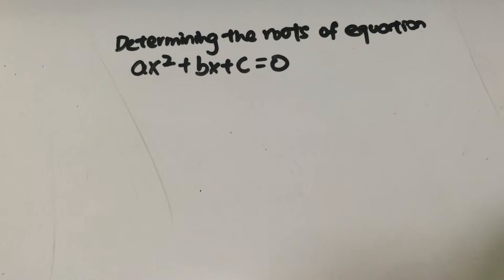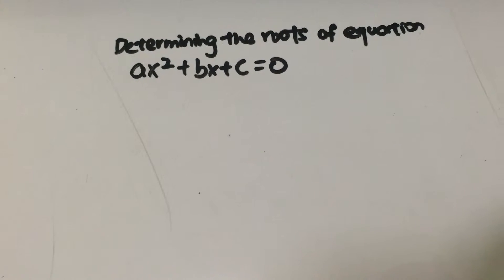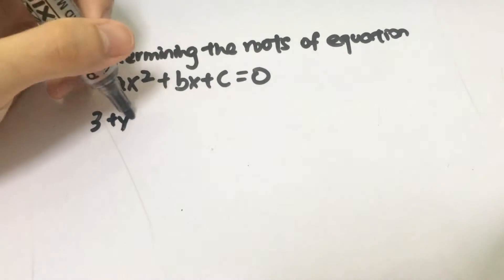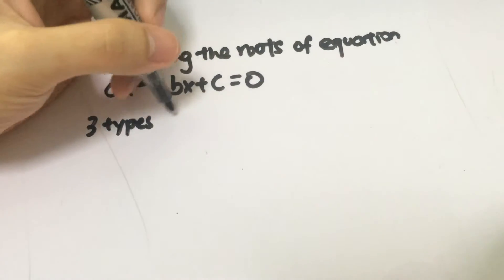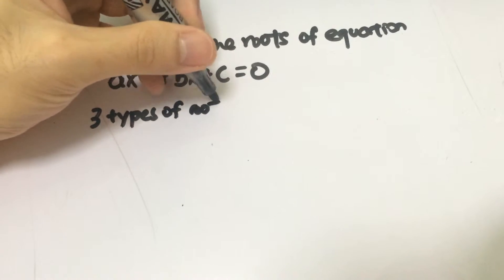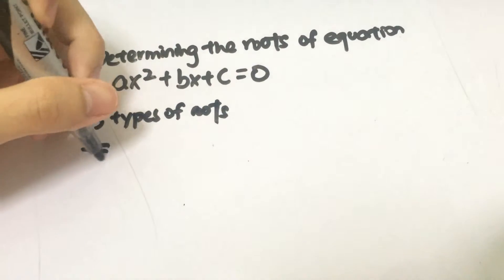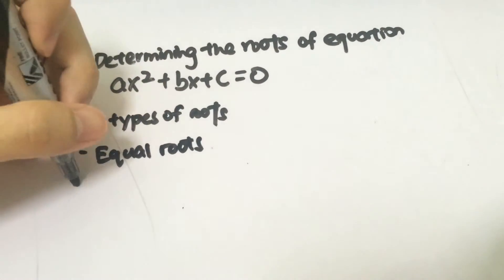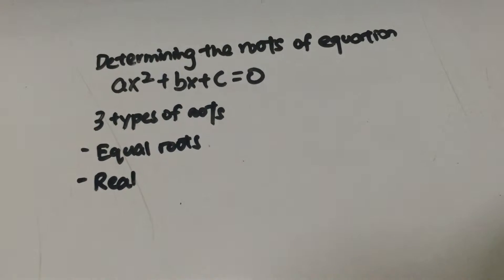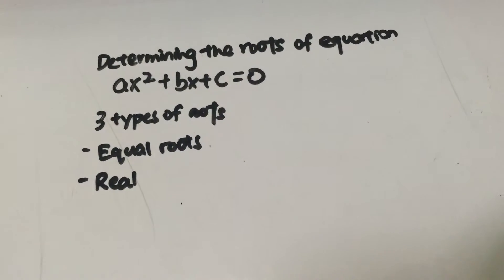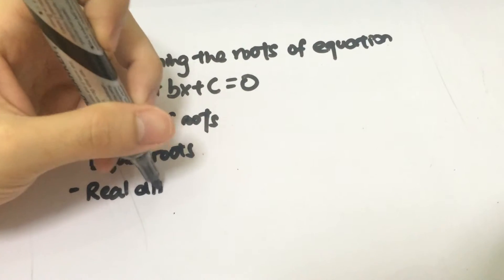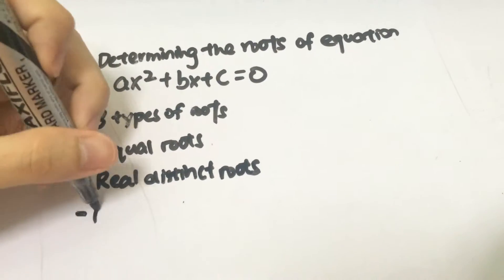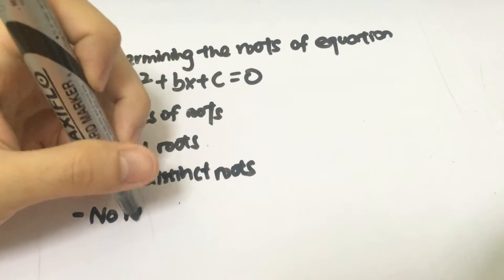The roots can be of three types. Let me just write down here — three types of roots. The first one can be equal roots. The second is real distinct roots. And finally, no real roots.